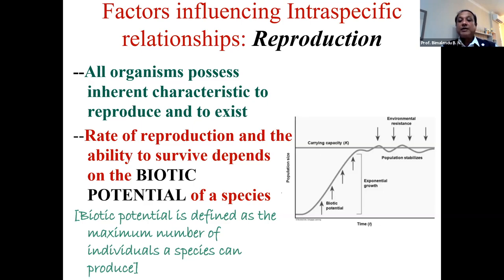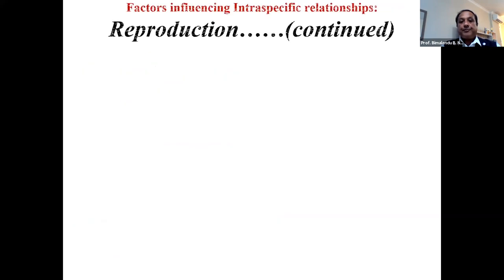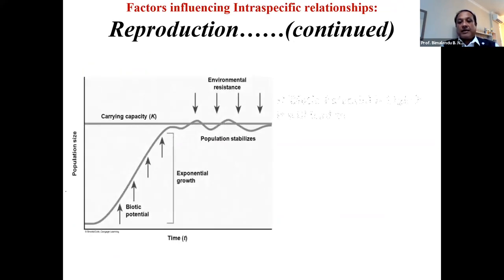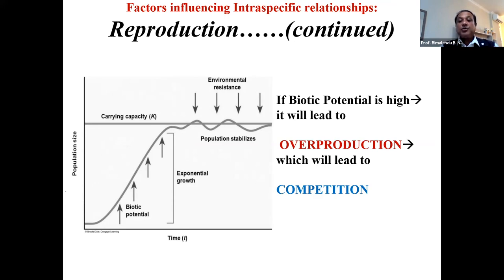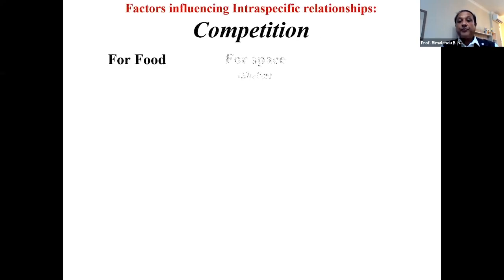Some species have a very high biotic potential, and population size can increase within a very short time. If the biotic potential is high, it will lead to overproduction, which will lead to competition. Remember, these are interrelated: high biotic potential leads to overproduction, overproduction leads to competition, and competition can be for food, for space, or for a mate.